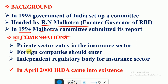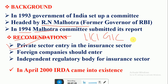The committee made some thought-provoking recommendations. The first was that the private sector must be allowed to enter the insurance sector. Prior to 1991, the insurance sector was dominated by a few state-owned companies like LIC, GIC, National Insurance Company, and United India Insurance Company.